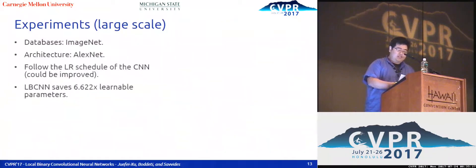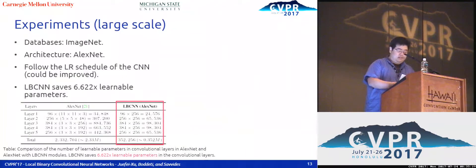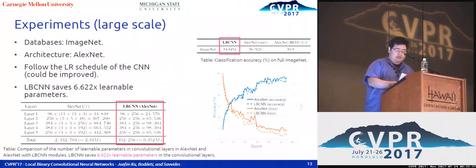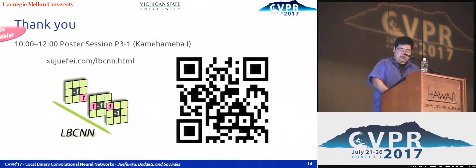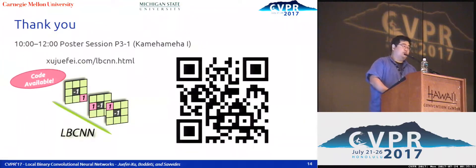Our large-scale experiments are carried out on the ImageNet dataset, where we observe that AlexNet with LBC layers performs as well as AlexNet with standard CNN layers while having 6.6 times fewer learnable parameters. To conclude, LBCNN provides an excellent trade-off between real-valued standard CNNs and purely binary CNNs. Please come to our poster for more information — we are at poster number one, and the code is available.